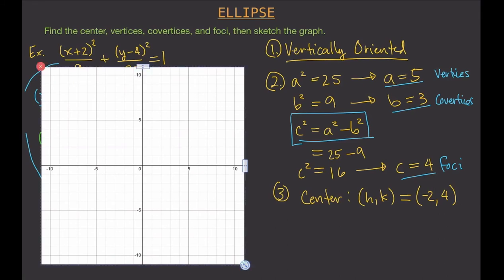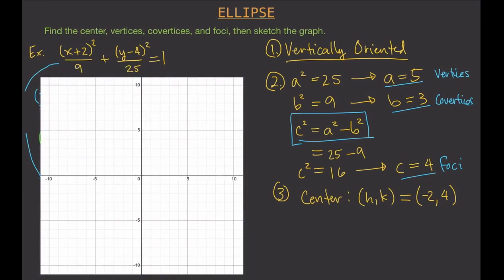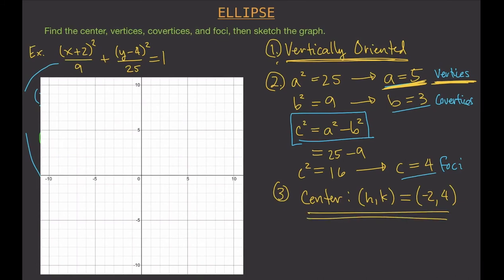Our ellipse is vertically oriented. The first thing to plot on the graph is the center. The center is at (−2, 4), so we count 2 units left and 4 units up — that is our center.